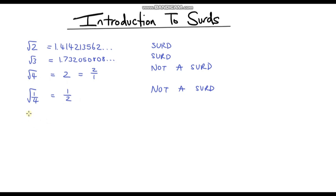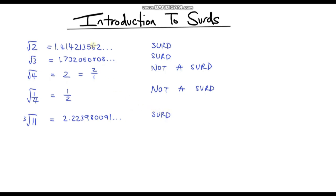This time, instead of a square root, let's take the cube root — the cube root of 11. I don't know what the cube root of 11 is, so let's type that into the calculator. We get 2.223980091... and again, this isn't the exact answer; this number goes on forever. We can't write this as a fraction, so this is also a surd. Any decimal that goes on and on forever can never be written as a fraction, so they'll always be surds.